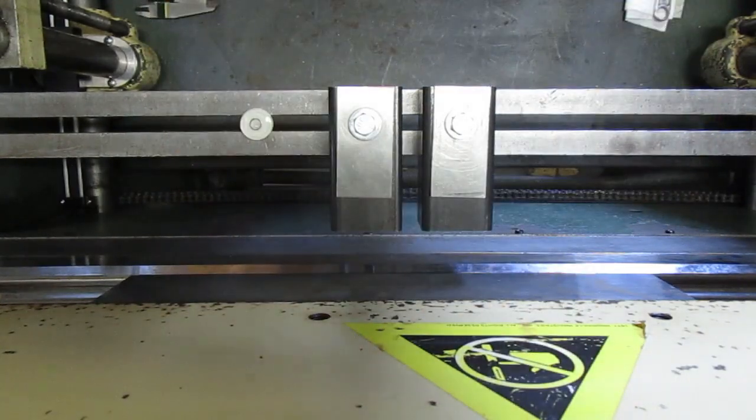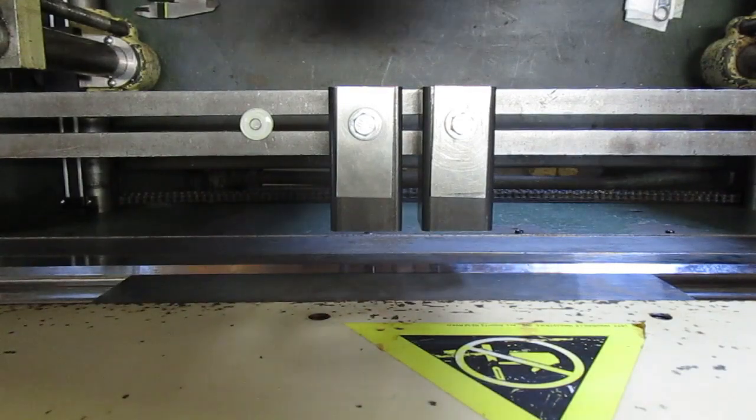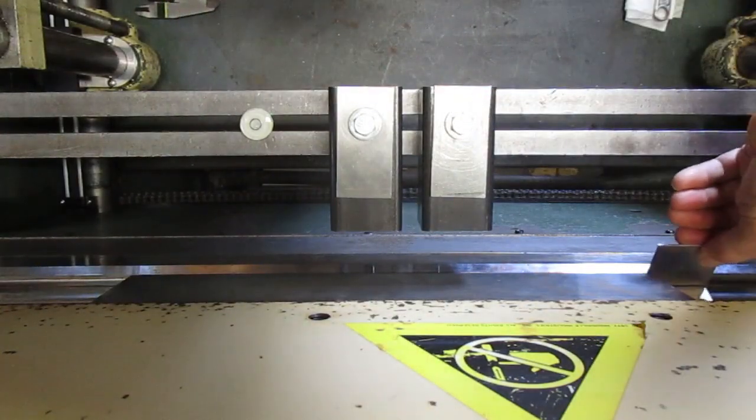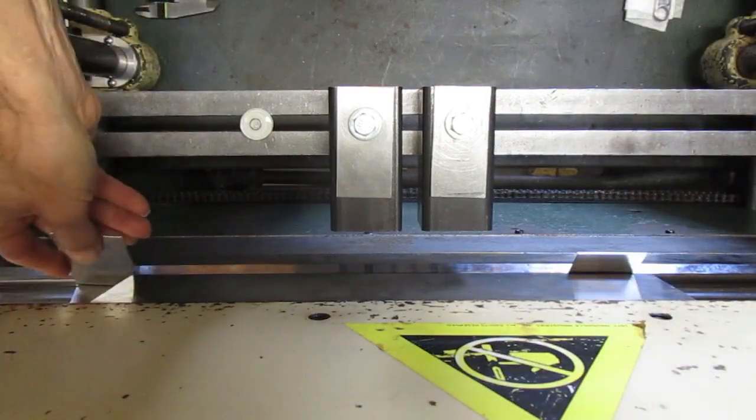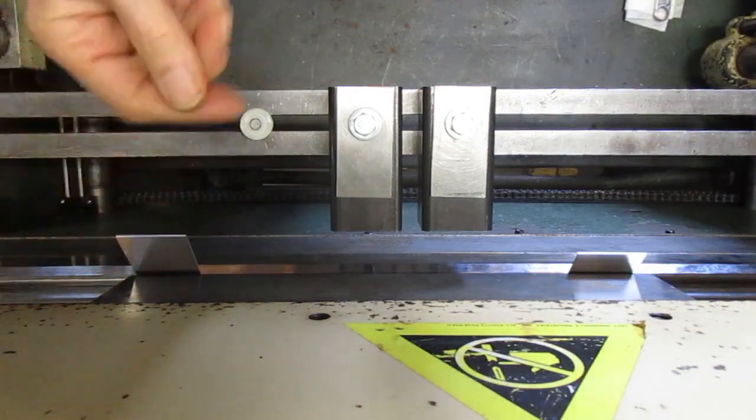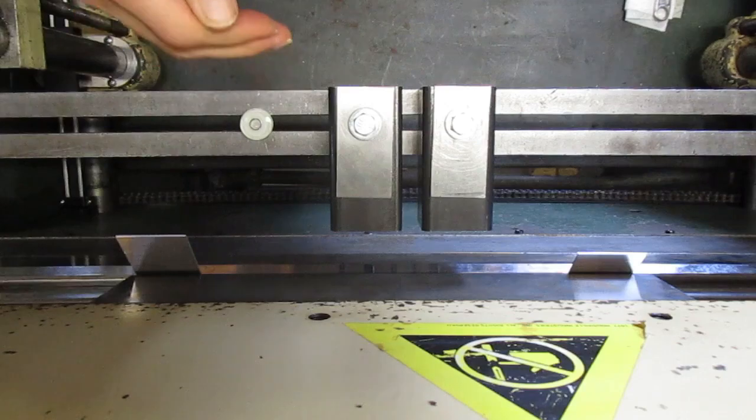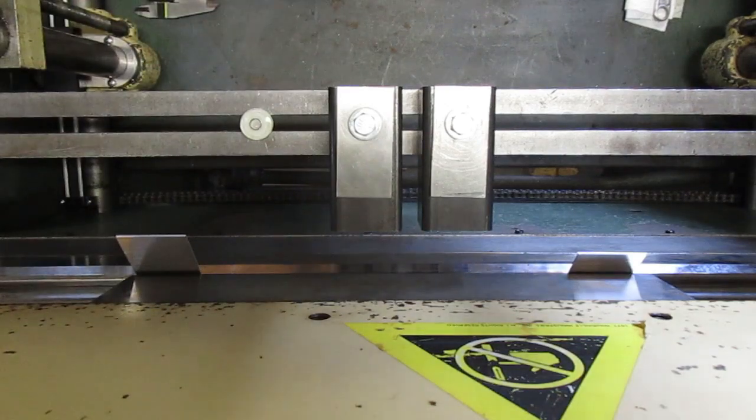So what we can do is we can take some of the sample pieces that we bent before and slide those in on either side. I'm going to go around and crank this die down and put some pressure on it, similar to how it would be if the metal was being bent.